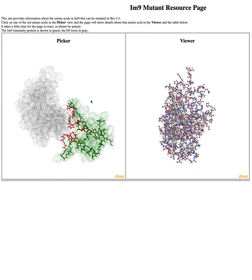There are a few things to notice about this. What we've shown here in green lines is the backbone of the IM9 protein, and we've highlighted certain amino acids in red. Those are the ones that we have ordered mutants for, and those are the ones that you can select and choose to explore for various mutations.